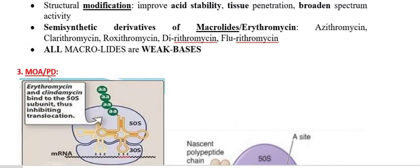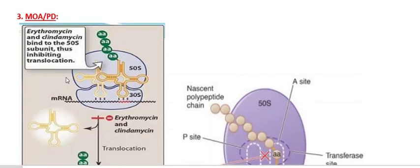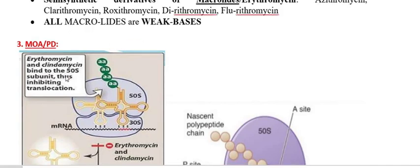The third important point is pharmacodynamics, also known as mechanism of action — how the drug inhibits bacterial growth or kills bacteria. Regarding the mechanism of action of macrolides, in one line: macrolides act on the same site as chloramphenicol or clindamycin, that is the 50S ribosome. Macrolides bind with the 50S ribosome of susceptible bacteria and thereby inhibit bacterial protein synthesis.